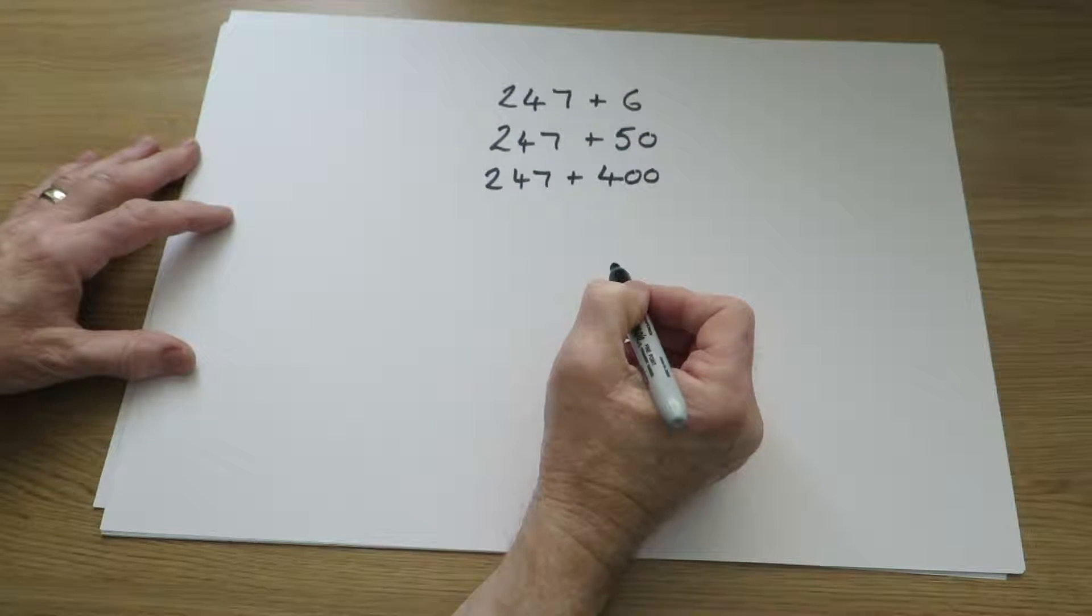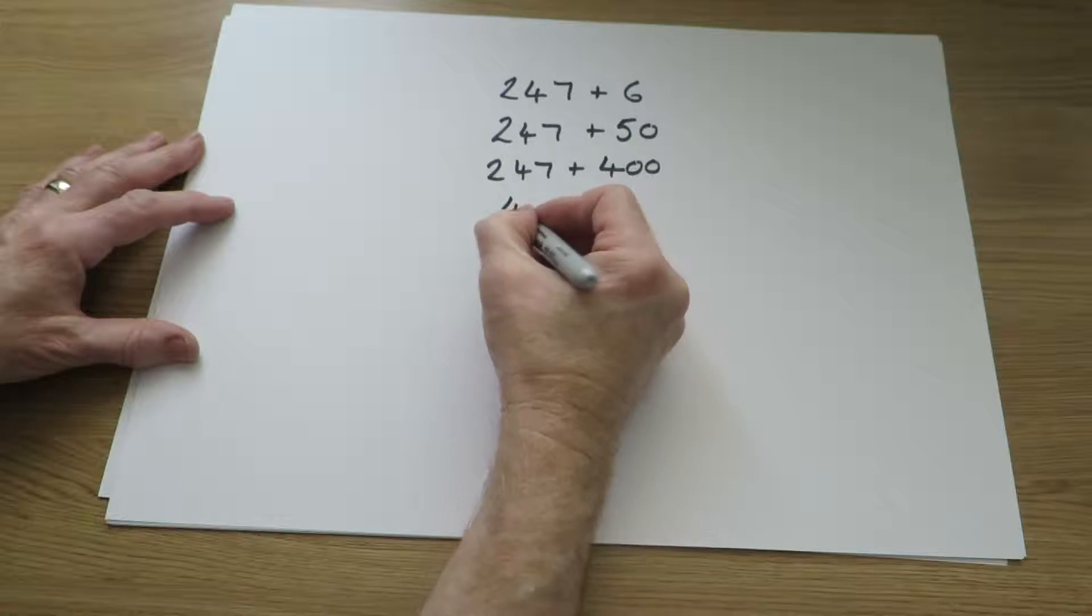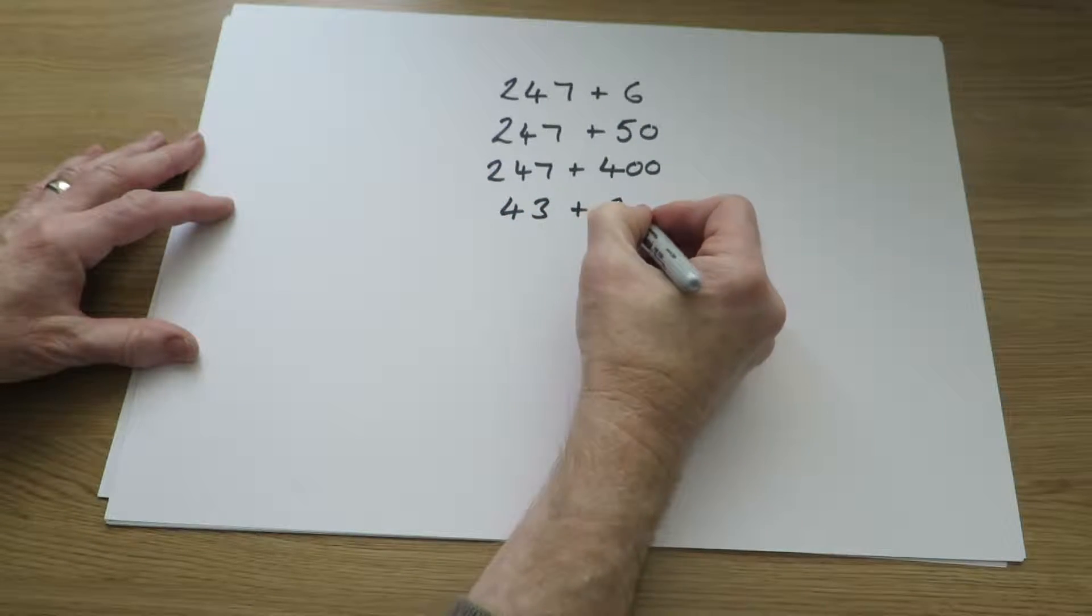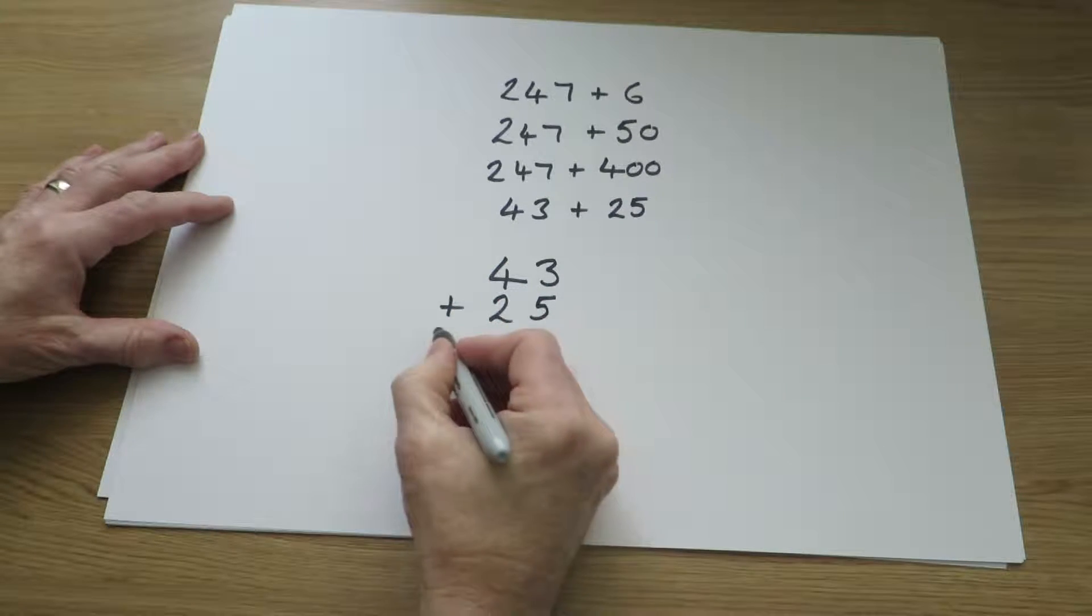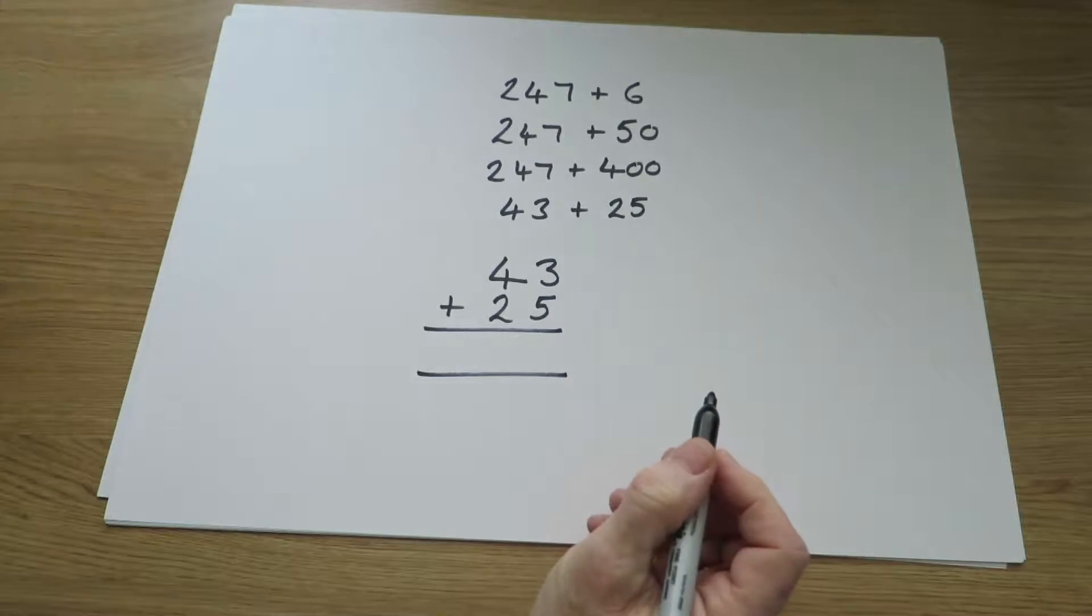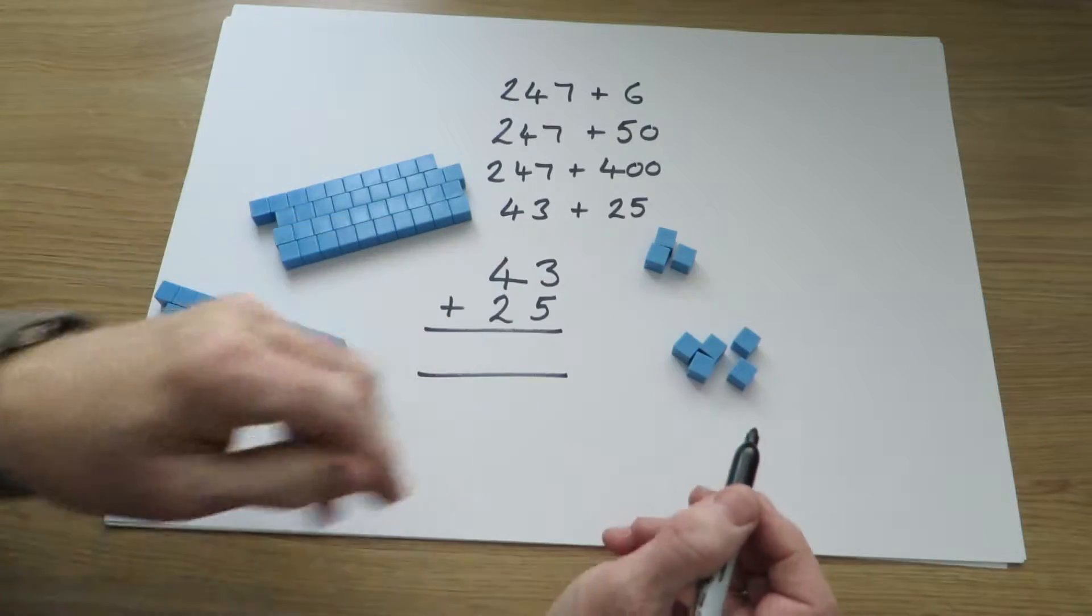They will continue learning to set numbers out in columns. So let's look at the question 43 add 25. In columns 43 add 25, and it can be demonstrated using this equipment 43, 25.